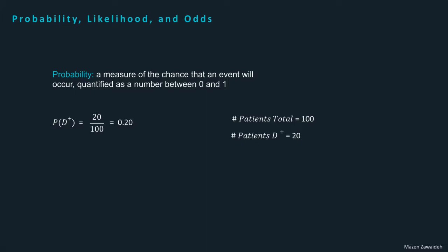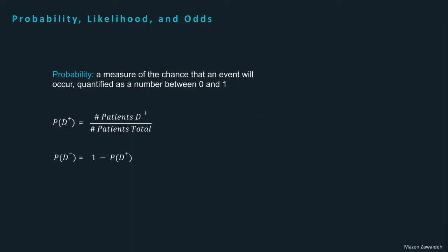Loosely speaking, a probability of 0 indicates impossibility, and a probability of 1 indicates certainty. Conversely, we can calculate the probability of the disease being absent by taking the complement — that's simply 1 minus the probability of disease being present.